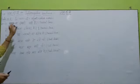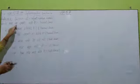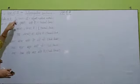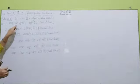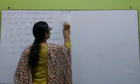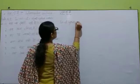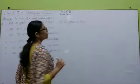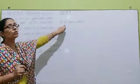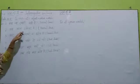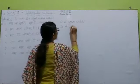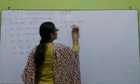अभी हमने देखा अपना first sentence है — क्या यह तुम्हारी घड़ी है? तो जब simple में बनाएंगे: 'it is your watch.' बट अब interrogative में क्या आगया? क्या यह तुम्हारी घड़ी है? तो जो helping verb 'is' है, वो starting में आजाएगा. तो sentence बनेगा: Is it your watch? और question mark. Similarly, क्या आज शनिवार है? → Is it Saturday today?